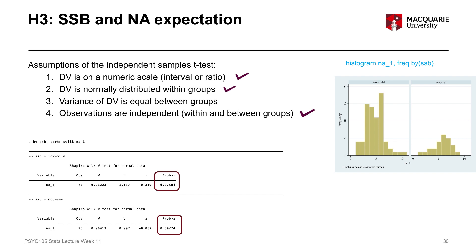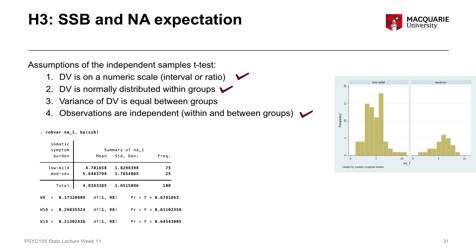So we can say that the normality assumption is met. Our last assumption is that the variance of our dependent variable is equal between the two different groups, which we can check using Levene's test of equality of variances. Looking at the output from Levene's test, this test is helping us interpret whether the spread of scores — in this case negative affect scores — is approximately even between the two different groups. The standard deviations are quite similar between the two groups, which is good, as standard deviations measure the spread or variability of scores.